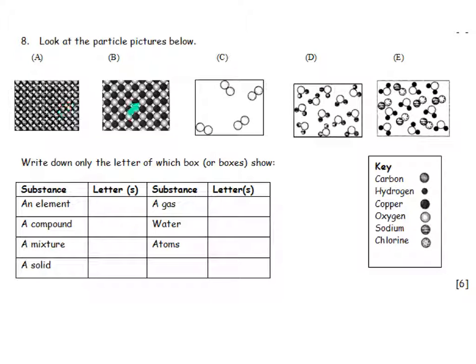These diagrams are sometimes referred to as magic spectacle diagrams. We can't really see atoms, but we can use a key to try and represent them on paper.